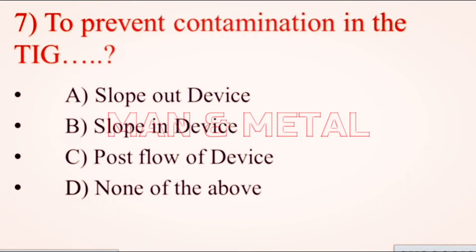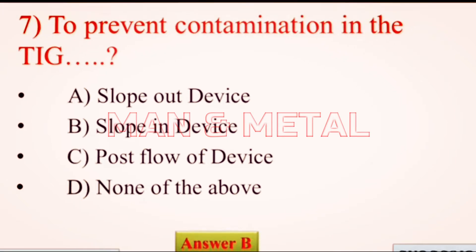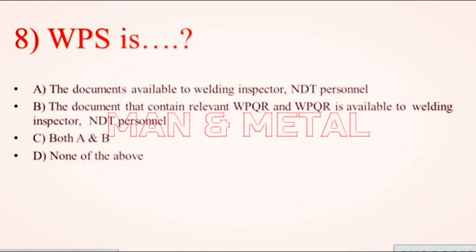Question 7: To prevent contamination in TIG welding: a) slope out device, b) slope in device, c) post flow device, d) none of the above.